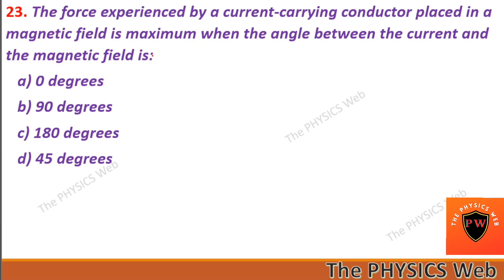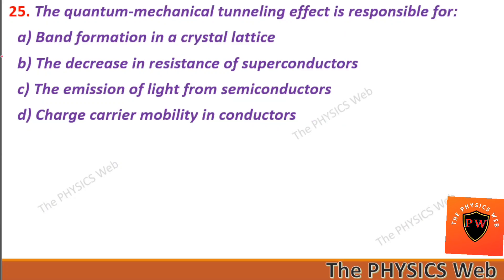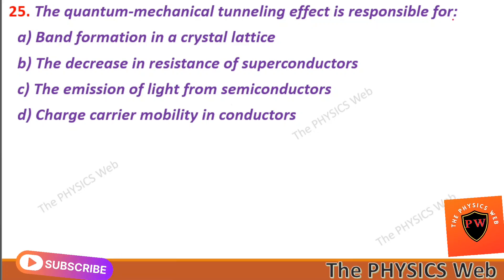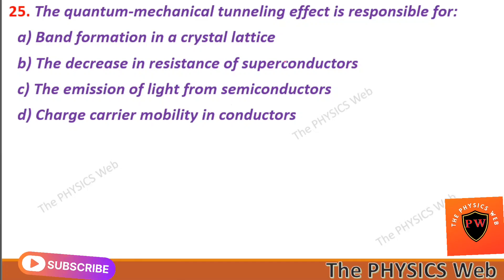Question twenty-three: the force experienced by a current-carrying conductor placed in a magnetic field is maximum when the angle between the current and magnetic field is 90 degrees. So B is your correct option. Question twenty-four: the Meissner effect in a superconductor is a result of complete expulsion of magnetic flux from the material. So A is your correct option. Question twenty-five: the quantum mechanical tunneling effect is responsible for the decrease in resistance of superconductors. So B is your correct option.